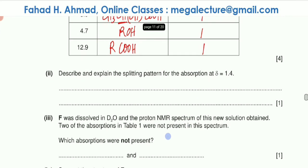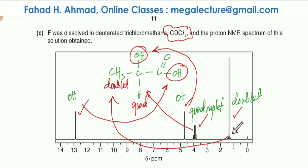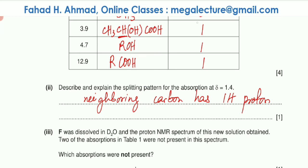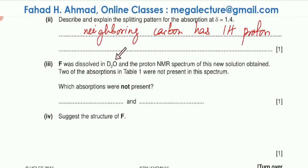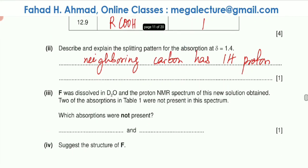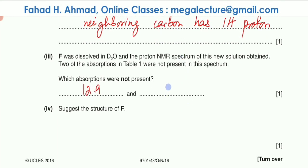For the splitting pattern at 1.4 ppm: it's a doublet because the neighboring carbon atom has one proton — n+1 gives 2 peaks. Regarding the D₂O experiment: when the compound is dissolved in D₂O, water promotes exchange of labile protons. The two O-H peaks disappear — the one at 4.7 ppm (alcohol O-H) and the one at 12.9 ppm (carboxylic acid O-H) would both not be present in the new spectrum.